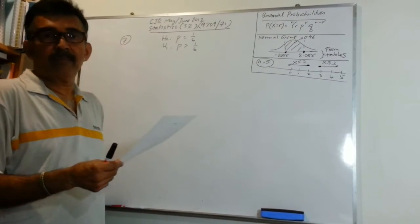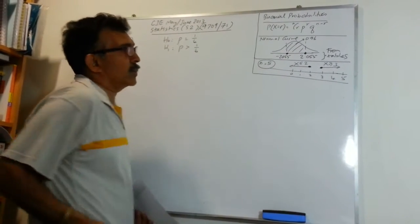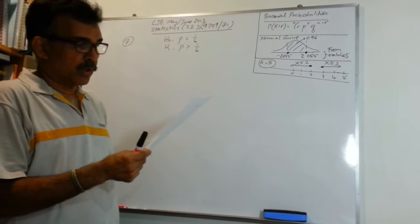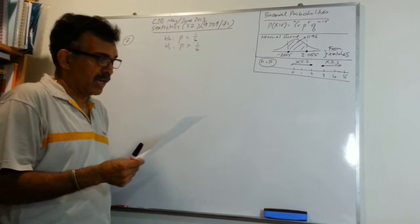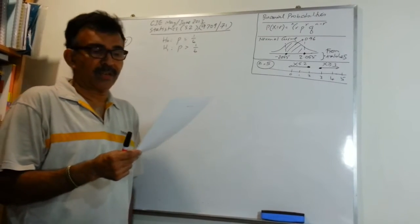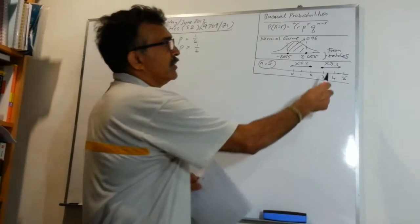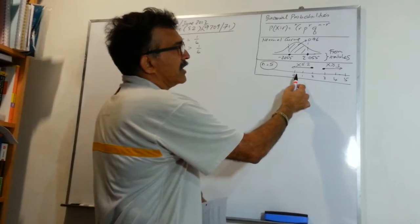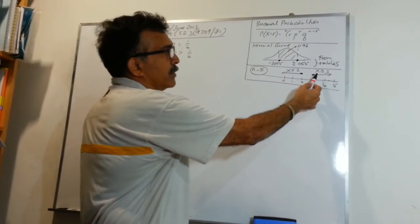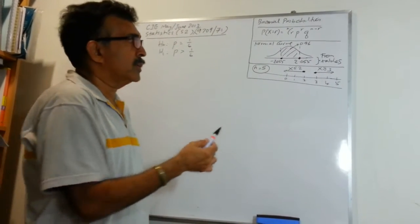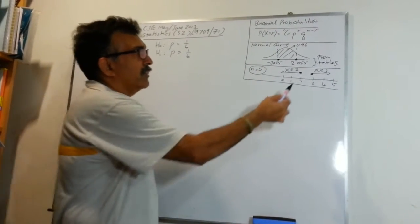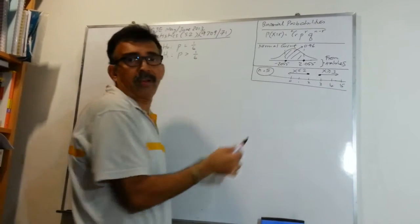She's going to throw it five times, so N equals five. If it shows a six on three or more throws, she will conclude that it's biased. That means she will reject the null hypothesis when she gets three or more sixes, which defines our rejection region. On a number line from zero to five, the rejection region is X greater than or equal to three. We're dealing with a binomial experiment where X is the number of successes.